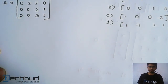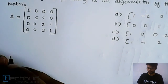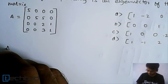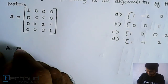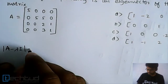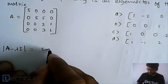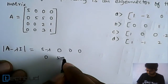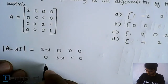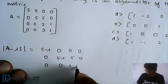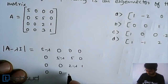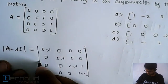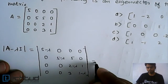We will start with finding out the characteristic matrix. We will solve it by A minus lambda I, that is equal to 0, which is equal to: 5 minus lambda, 0, 0, 0; 0, 5 minus lambda, 5, 0; 0, 0, 2 minus lambda, 1; 0, 0, 3, 1 minus lambda. This is a determinant equal to 0.